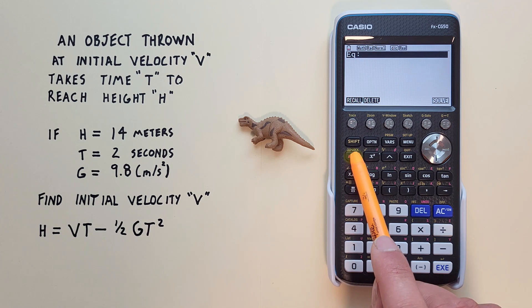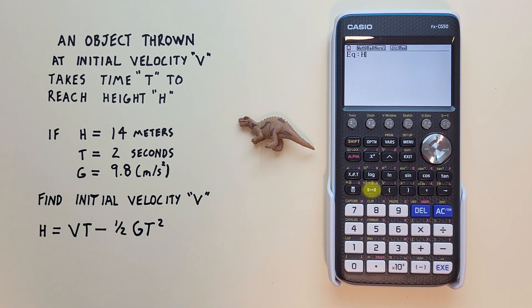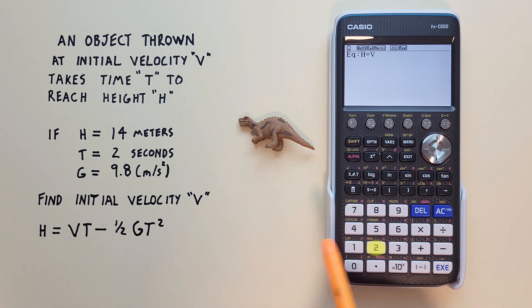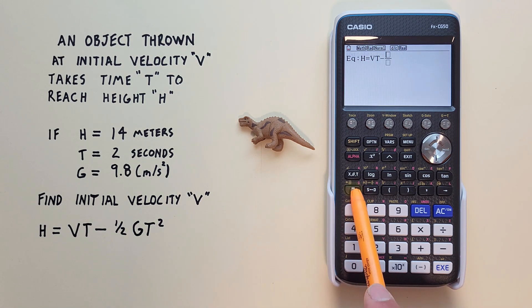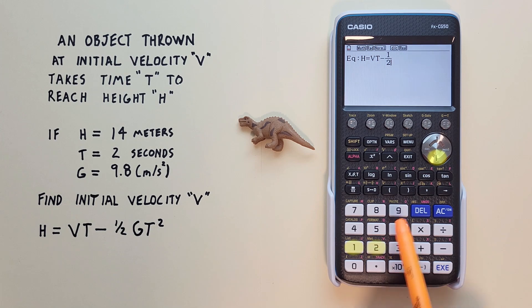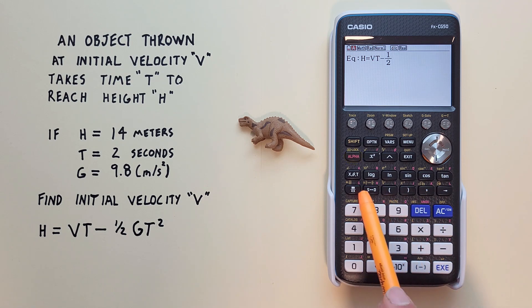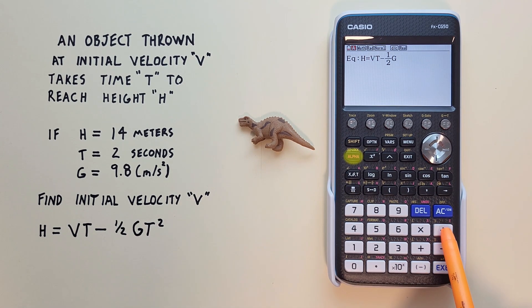So we'll go alpha H equals V T minus 1 over 2. So we'll do the fraction. 1, 2, there we go. G, so alpha G, alpha T squared. So we can use the X squared. There we go. We've entered our equation. And hit EXE.